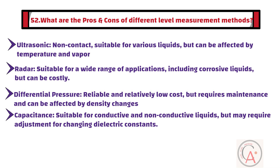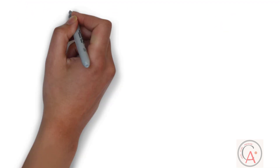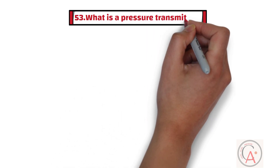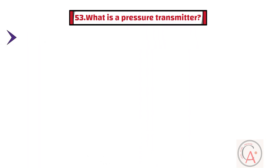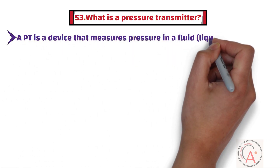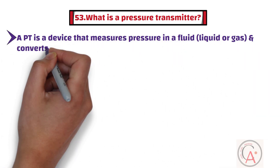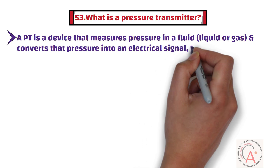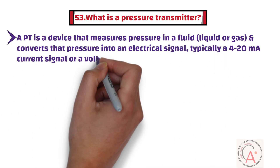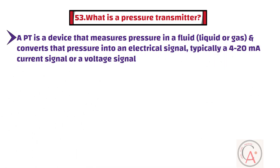Question 53: What is a pressure transmitter? A pressure transmitter is a device that measures pressure in a fluid — such as liquid or gas — and converts that pressure into an electrical signal, typically a 4 to 20 milliampere current signal or a voltage signal. This electrical signal can be transmitted to a control system, where it is used for monitoring and control purposes.